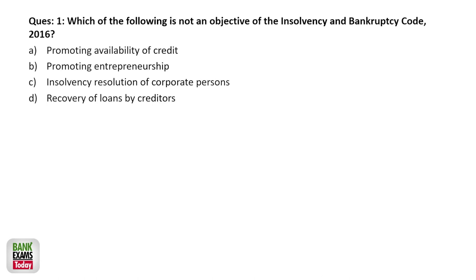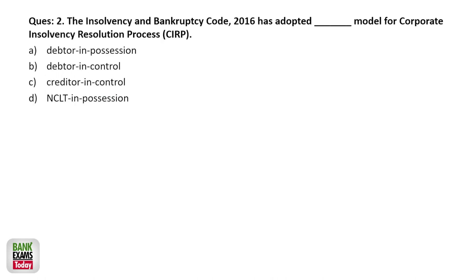Practice question: which of the following is not an objective of IBC? Options: promoting availability of credit, promoting entrepreneurship, recovery of loans by creditors, insolvency resolution of corporate persons. IBC 2016 has adopted a creditor-in-control model for CIRP. As you might have seen, creditors are in control — insolvency professionals are hired, appointed after moratorium period, and then the committee of creditors takes the action and makes the decisions.